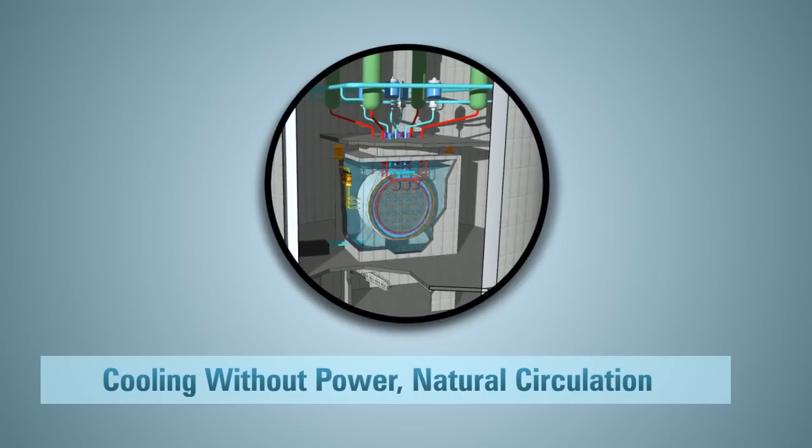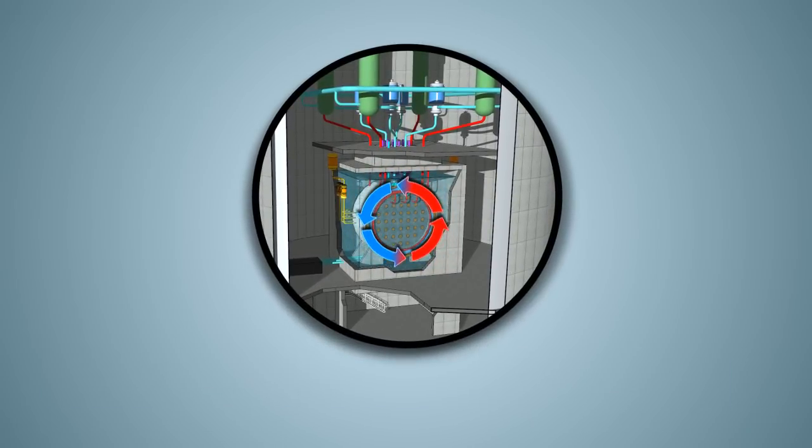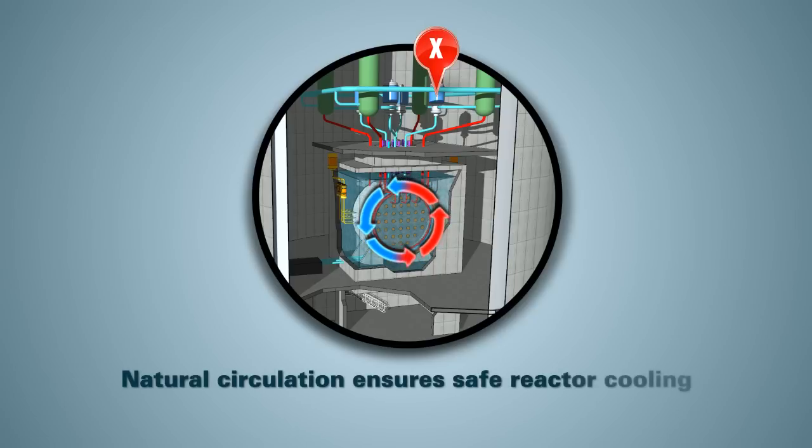To reduce this heat, natural circulation takes over when the pumps that normally push the coolant through the heat transport system lose power and stop working. For natural circulation to continue over time, the steam generators need to be filled with cool water.